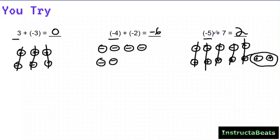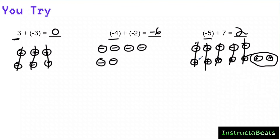A couple of things to take away: hopefully you got that right, and if not, it's okay — it's okay to fail as long as you learn from it. Always start with your first number — in addition the commutative property means order doesn't technically matter, but when we get to subtraction you have to start with that first number, so always draw your first addend first. Also, be neat as you draw them so you can clearly see the zero pairs and cancel opposite charges right on top of one another.